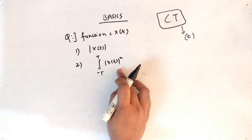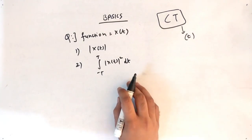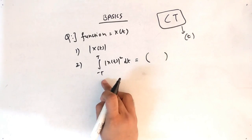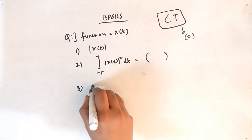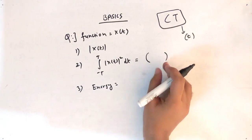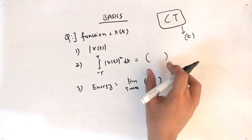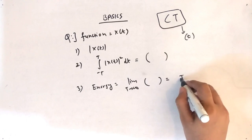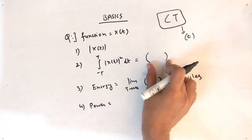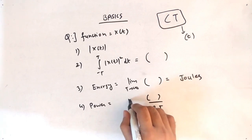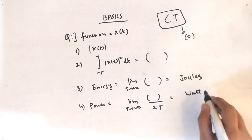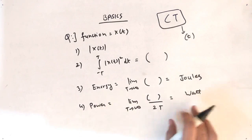Because it is a continuous time signal, we use the integral with dt. You will get an answer in terms of T since the limits are in T. Third step: to find energy, take the limit as T tends to infinity of that value — this gives energy in joules. Fourth step: to find power, divide the value by 2T and then take the limit as T tends to infinity — this gives power in watts.